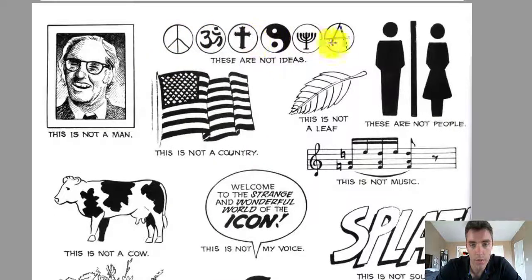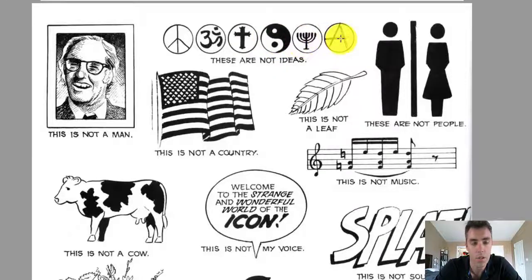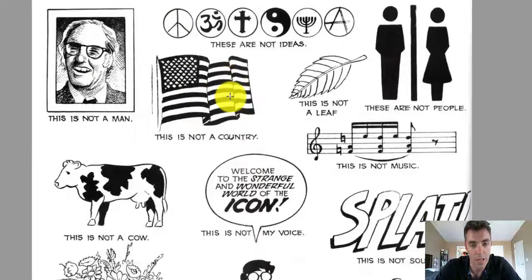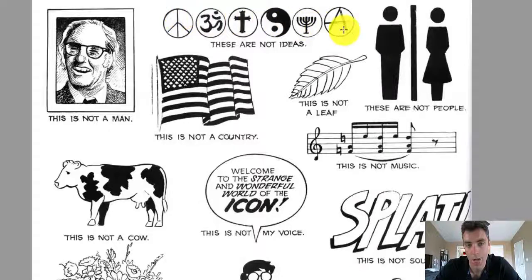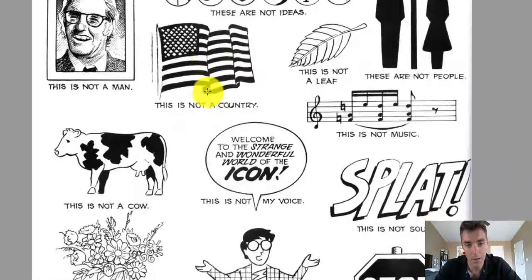He says these symbols are not ideas — they're icons. This is an ohm, this is a cross, this is a yin-yang, this is a menorah, this is an anarchy symbol, this is a peace sign. But those are not the ideas themselves — this is the representation, the iconography, the abstraction of those ideas. And so it requires our participation in it. That is the central idea here.